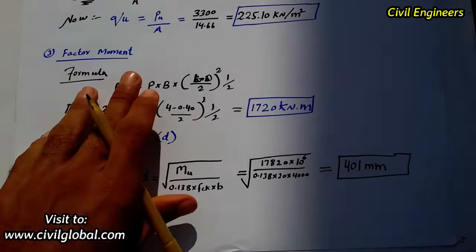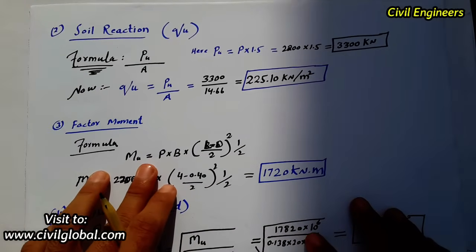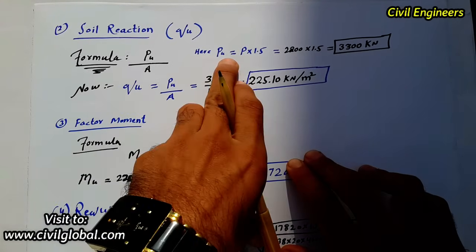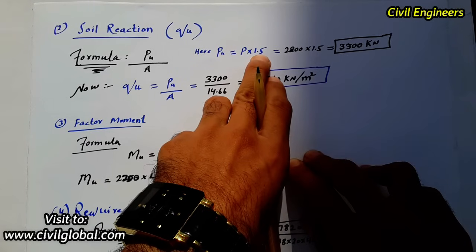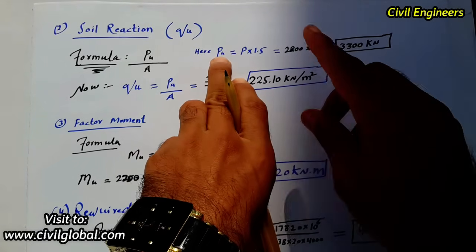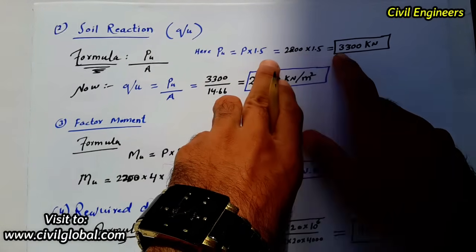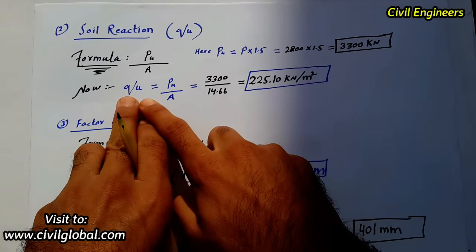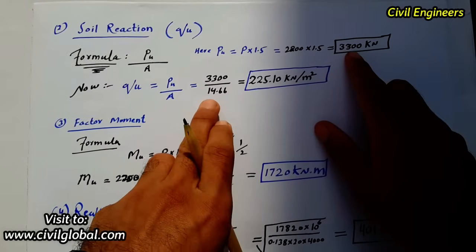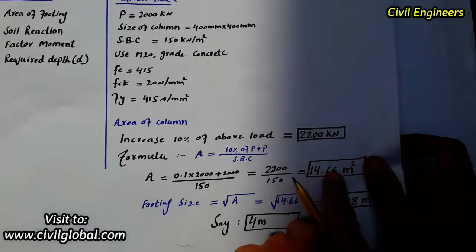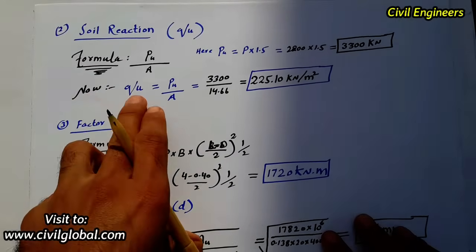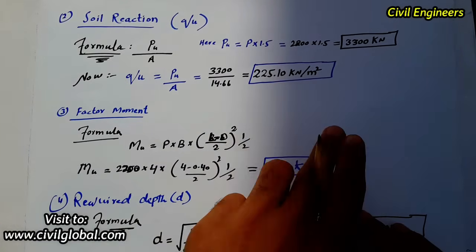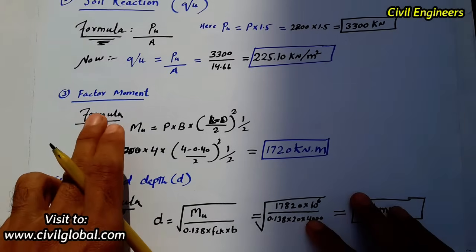Step 2: Soil reaction. The formula is qu = Pu / Area. Pu is the factored load: Pu = P × 1.5 = 2,200 × 1.5 = 3,300 kN. Then qu = 3,300 / 14.66 = 225.10 kN/m². This is the soil reaction.